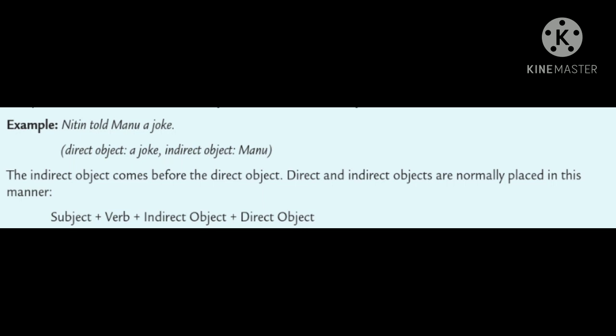Example: Nitin told Manu a joke. The direct object is a joke. The indirect object is Manu. The indirect object comes before the direct. Direct and indirect objects are normally placed in this manner.